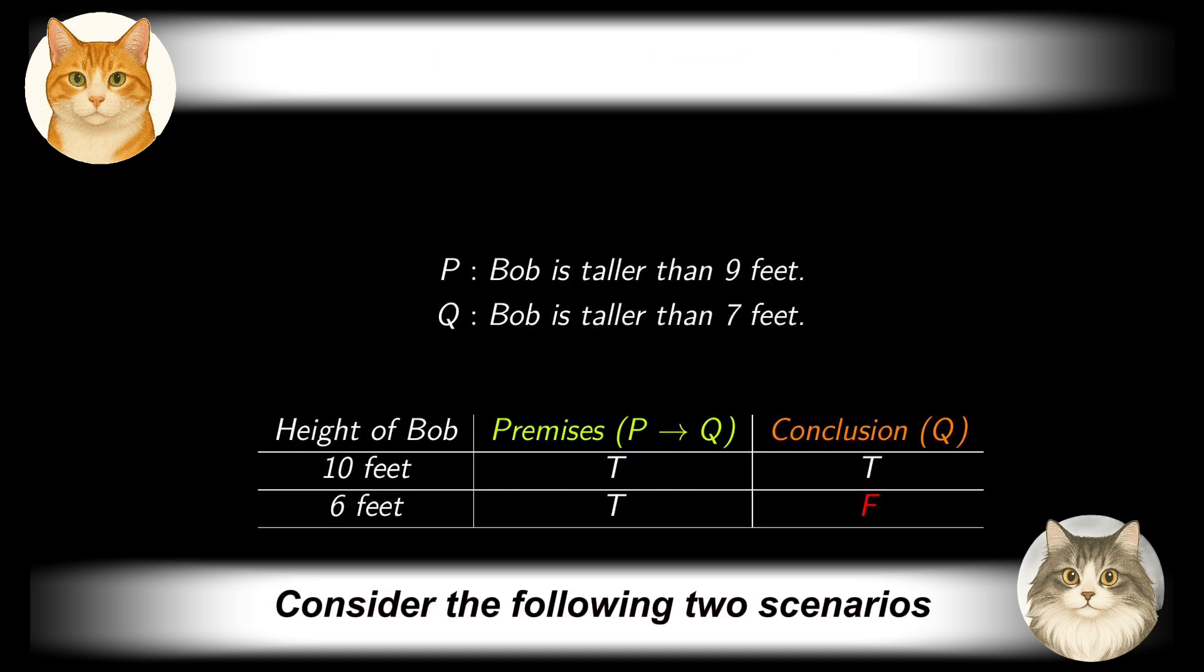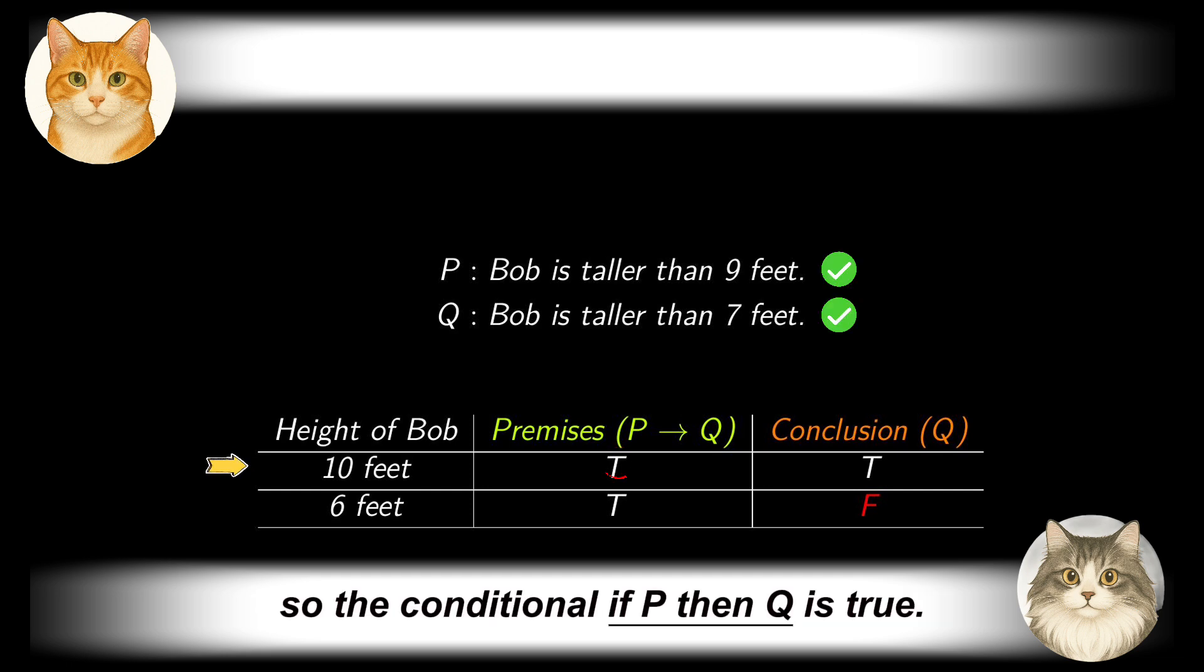Consider the following two scenarios for the previous example. Scenario 1: Bob is actually 10 feet tall. In this case, the antecedent P and the consequent Q are both true, so the conditional 'if P then Q' is true. As a result, using the rule of inference, a true conclusion is derived from a true premise.